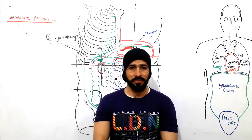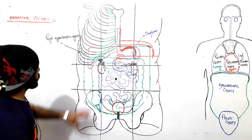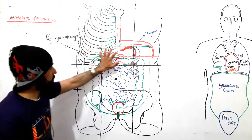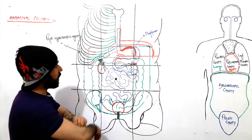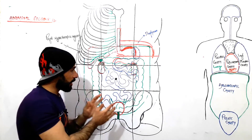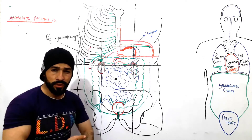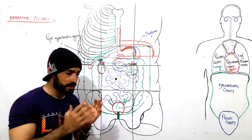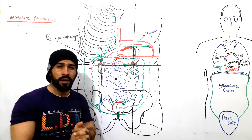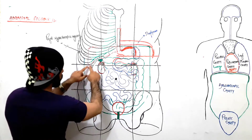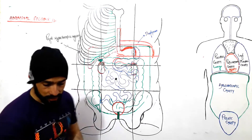Hello dear friends and students, assalamu alaikum and welcome back. As you know, we are discussing the different regions of the abdomen. Up to now I have discussed the right hypochondric region, the epigastric region, and the left hypochondric region. We had a separate lecture on how the abdominal regions are created — the link for those videos will be in the description. Now we are going to discuss the right lumbar region, then the left lumbar and the umbilical region.